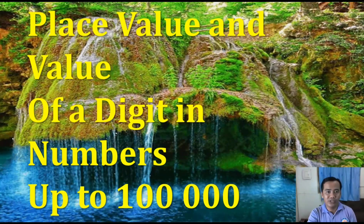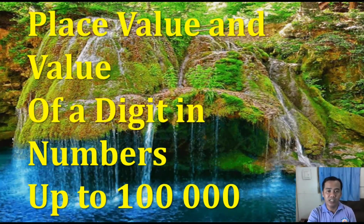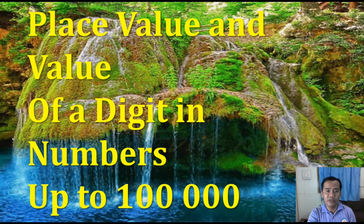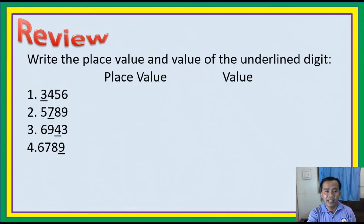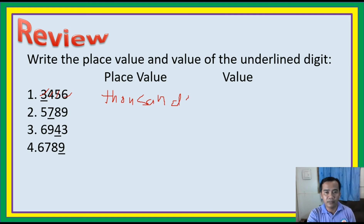Let us continue with our lesson: place value and value of a digit in numbers up to 100,000. Let us have a review first. What is the place value of 3 in 3,456? The answer is the 1,000's place. And what is the value of 3? 3,000.